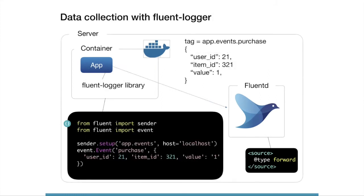The second approach is using the Fluentd Logger library, which is implemented in each programming language. This approach is mainly for application data or metrics. With this approach, you need to add logging code in your application, but you can collect any data with Fluentd. The Fluentd configuration is the same — use the forward input plugin to receive data from the Fluentd Logger.